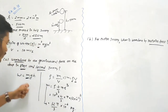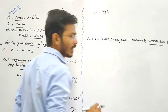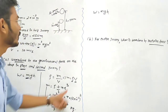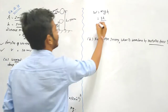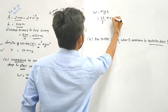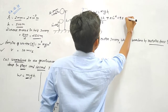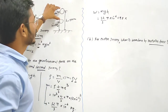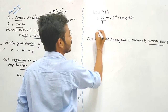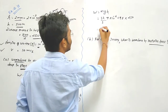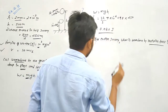Now we put this value into W = mgh. Therefore W = (32/3) × π × 10⁻⁶ × g (9.8) × h (250 meters). The answer works out to approximately 0.082 joules. This is the work done by gravitational force for the first half of the journey. For the second half, the distance is also 250 meters, so the work done by gravity is the same, approximately 0.082 joules.